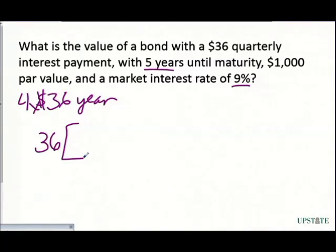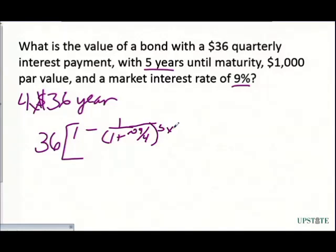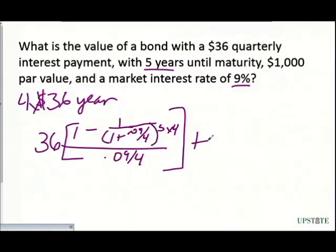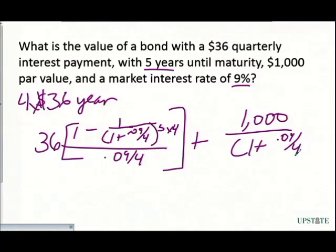That $36 payment is multiplied by 1 minus 1 over (1 plus 0.09 divided by 4), raised to the power of 5 multiplied by 4. So this is 1 plus 0.0225 raised to the 20th power, divided by 0.09 divided by 4. Then we add our $1,000 face value divided by (1 plus 0.09 divided by 4) raised to the 20th power.